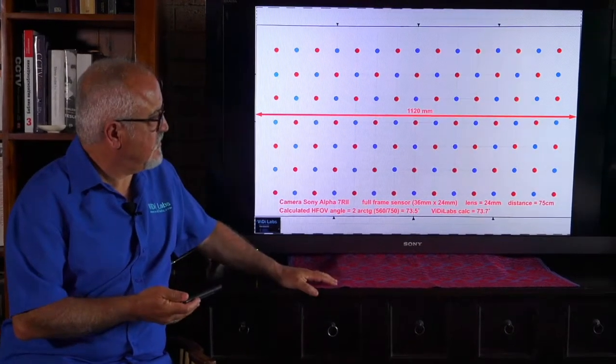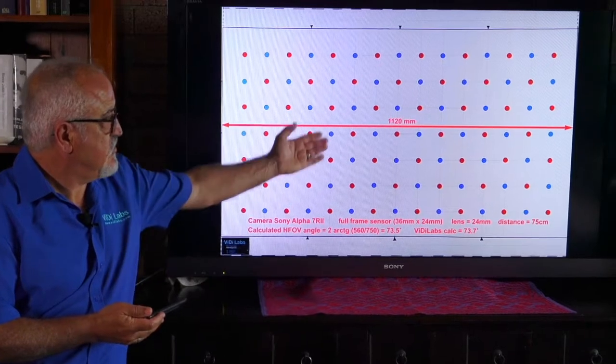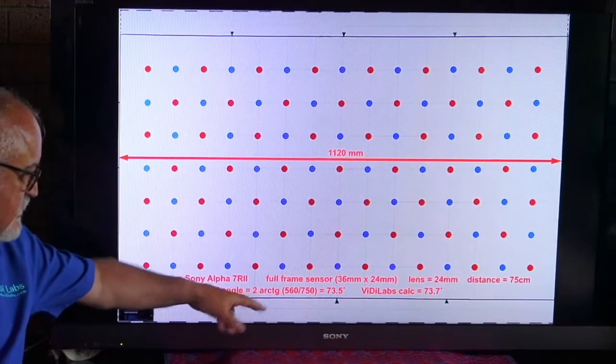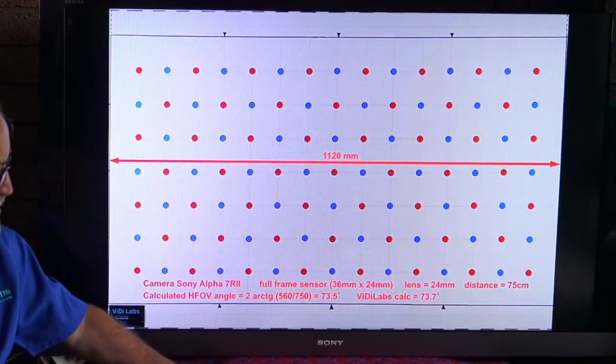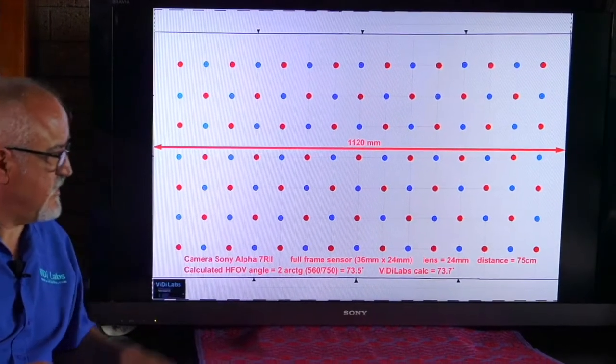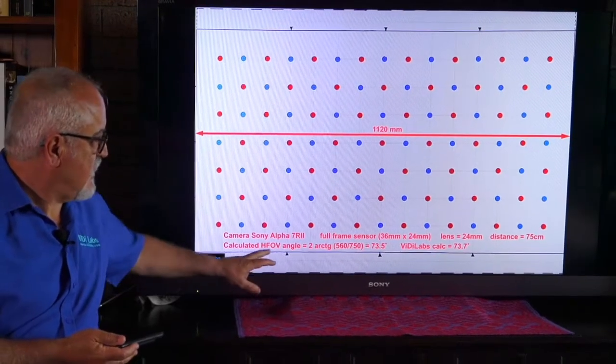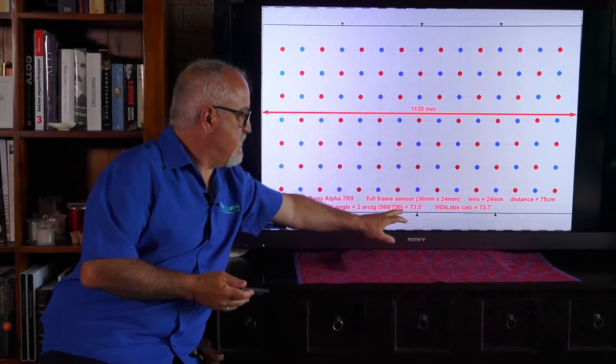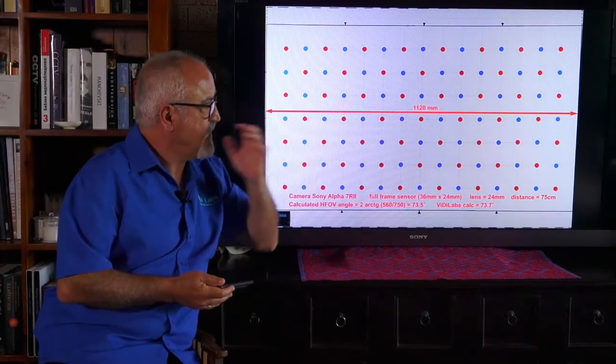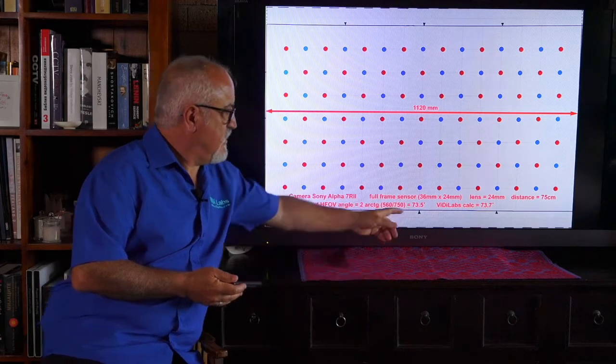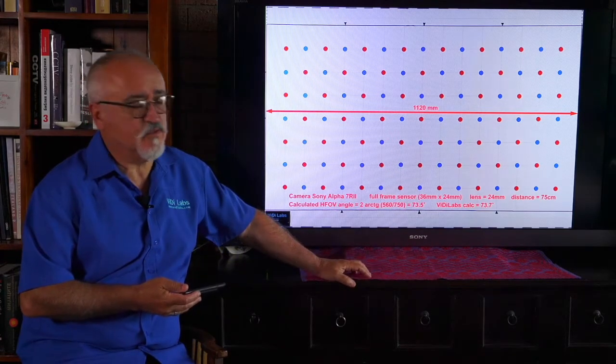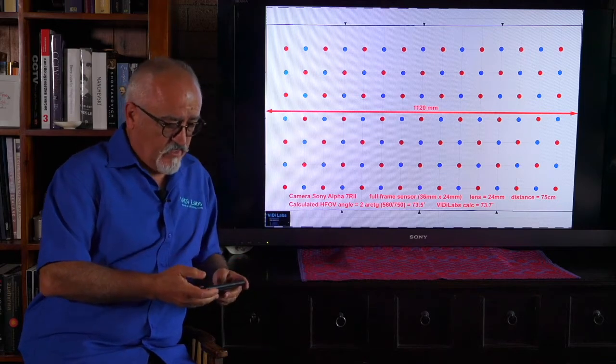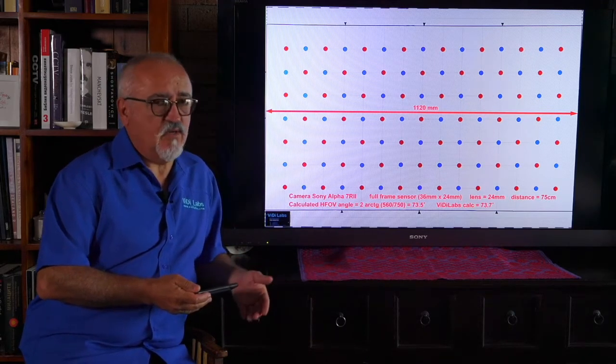Similarly, this is the calculation for the full frame digital SLR. So 1120mm width, the same test chart. The camera was Sony Alpha 7R II full frame, which sensor is 36 by 24 millimeters. The lens we used was set at 24 millimeters, and the distance measured was 75 centimeters. The calculated horizontal field of view using the simple optical trigonometry would have been 560, which is half of this width, versus 750 millimeters, which is the distance from the chart to the actual focal length point. That gives about 73.5 degrees horizontal field of view. And the Videolabs calculator has shown 73.7 degrees, which is basically pretty much the same. So there is absolutely no variation between the calculator and properly corrected lenses.